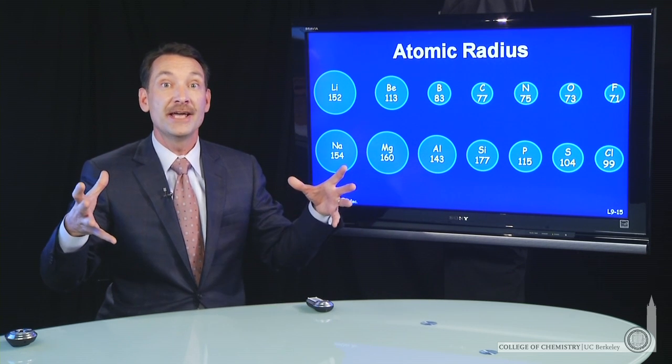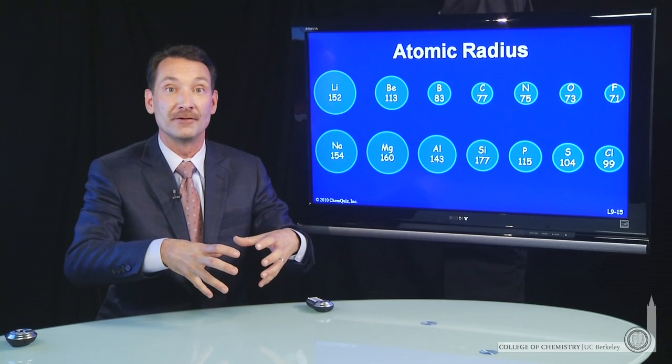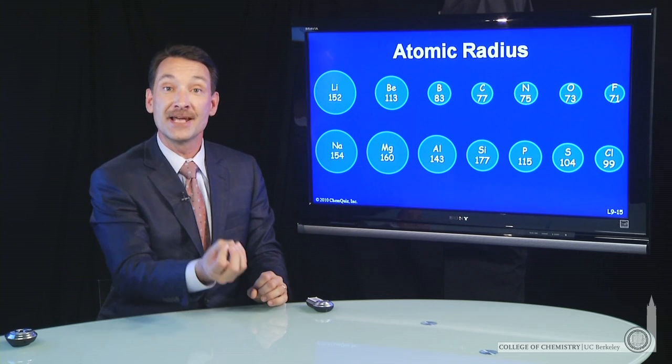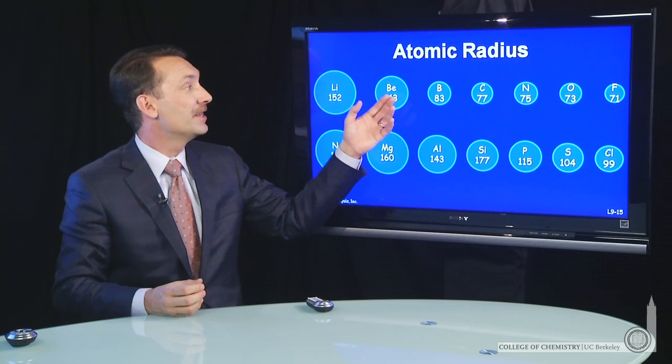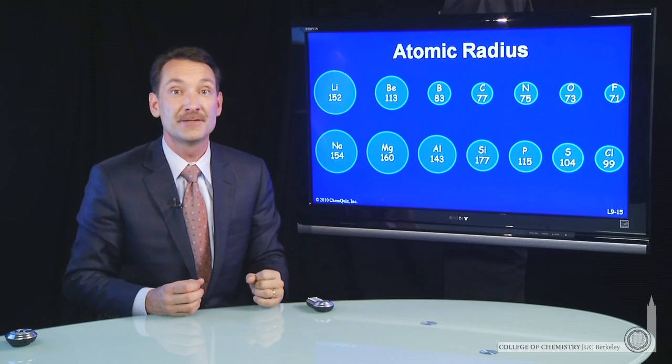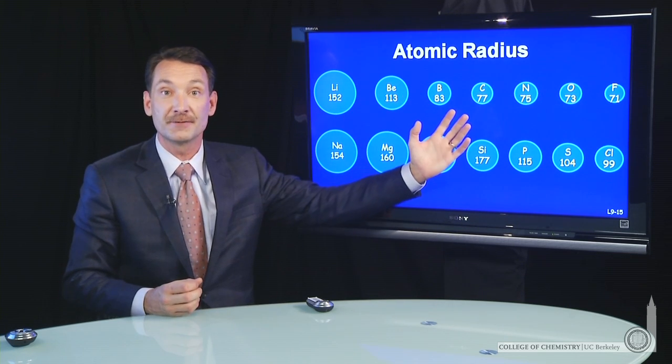We understand that we're going into the same principal quantum level, but we're adding more nuclear charge. As we go across the periodic table, the charge on the nucleus increases by one as we go across in each step.